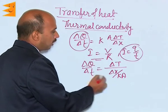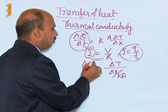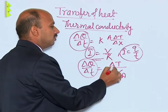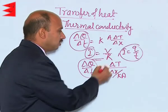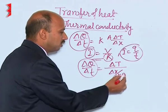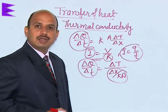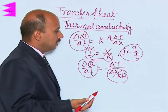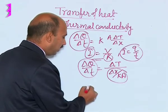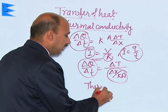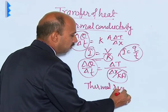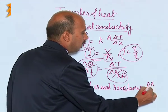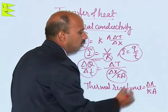This can be compared to the electric current formula: the thermal current corresponds to I, the temperature difference corresponds to potential difference V, and the term delta x upon k times A corresponds to resistance R. This is analogous to electric resistance. So thermal resistance equals delta x upon k times A.